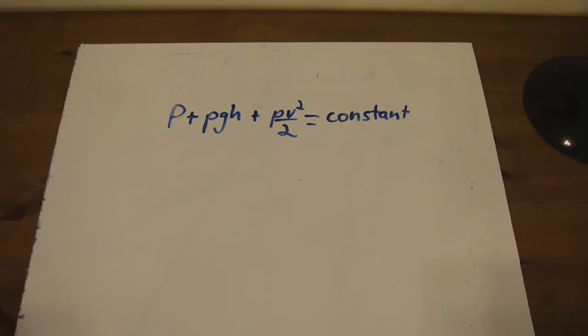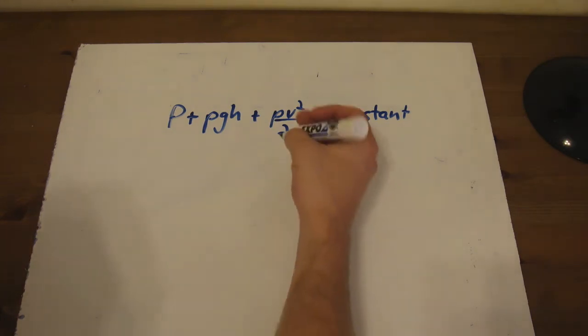All right. So if we look at this, we notice some interesting things. Rho V squared over 2. Well, that's really similar to saying M V squared over 2, which is kinetic energy.